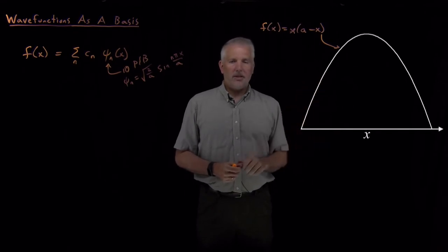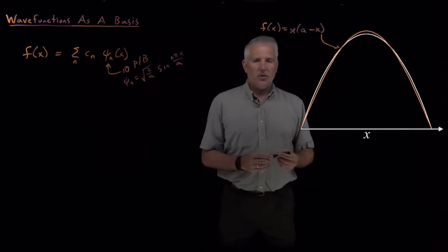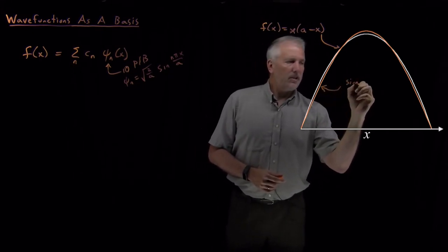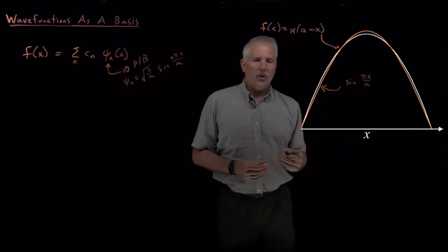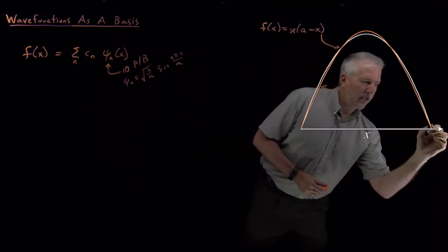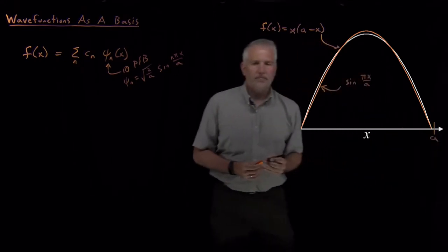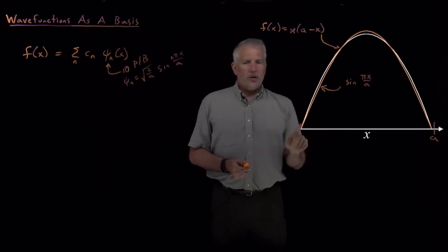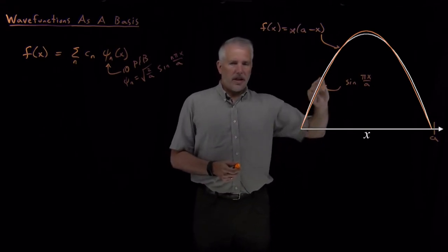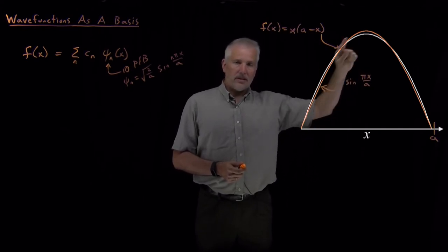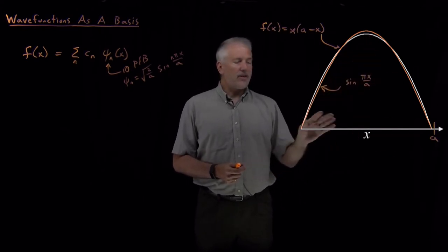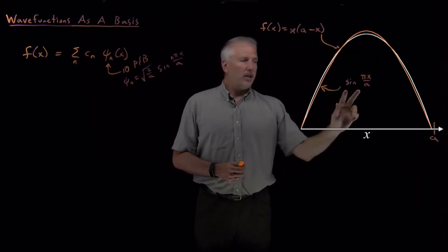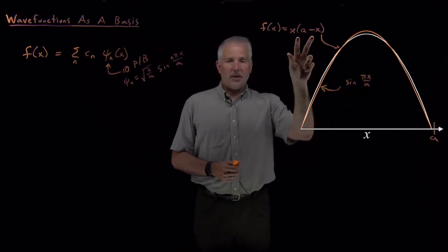If we put up the next figure on the screen, this orange graph is a graph of sine of 1·πx over a, where a is the box length — where this function hits zero. You can see that the sine wave, the orange curve, is similar in the sense that it has a peak in the middle and zero on the two edges, but it's not exactly the same mathematical function. Sine of nπx over a is not the same as a parabola.